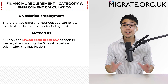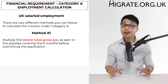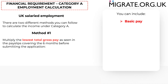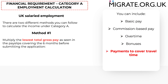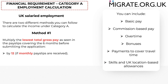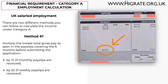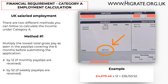Method 1: Multiply the lowest total monthly pay — as seen in the pay slips covering the six months prior to submitting the application, including basic pay, commission-based pay, overtime, bonuses, payments to cover travel time, and skills and UK location-based allowances — by 12 if monthly pay slips are received, or by 52 if weekly pay slips are received. For example, we gathered the last six months' pay slips, and the lowest total gross pay was £4,679.46. Since it's a monthly pay slip, we multiply by 12, resulting in a gross annual income of £56,153.52. Therefore, as long as the application is evidenced correctly, £56,153.52 is the figure which can be used to satisfy the financial requirement.